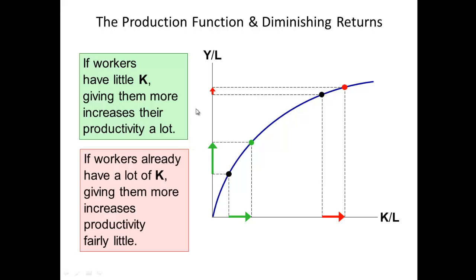the increase in productivity of a worker who is already given a lot of capital. So in this example, here's a poor country — a developing nation — and this would be a developed nation. When you give more capital, you notice that the same amount of capital given to a poorer nation results in greater productivity than with a more developed country.